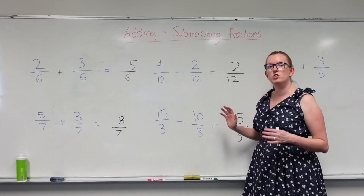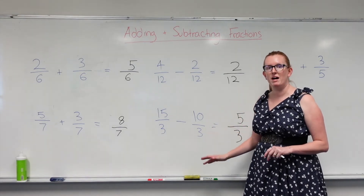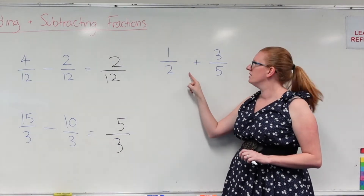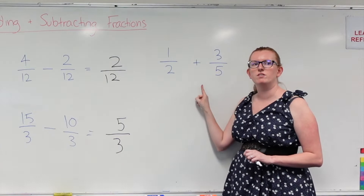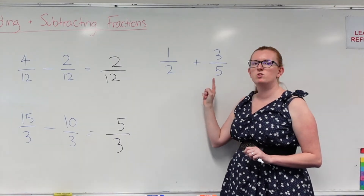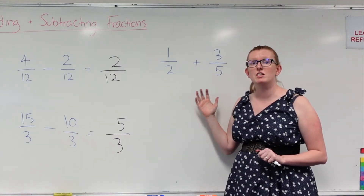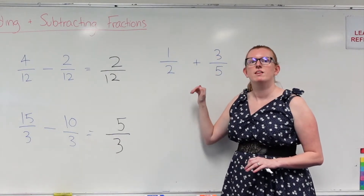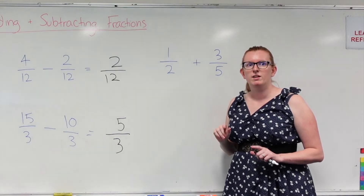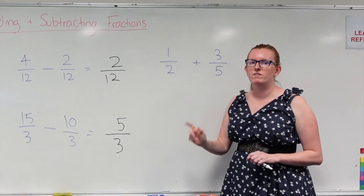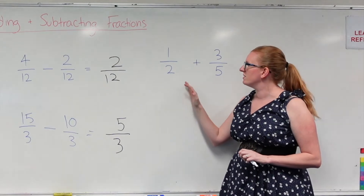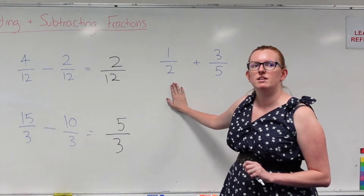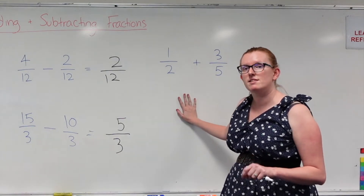Now it becomes tricky when your denominators don't match. So let's have a look at this question. We've got 1 over 2 plus 3 over 5. Now my denominators do not match, so it means I can't actually add these until I turn them into equivalent fractions that have a matching denominator. If you need a reminder on what equivalent fractions are, go back to that video about equivalent fractions.